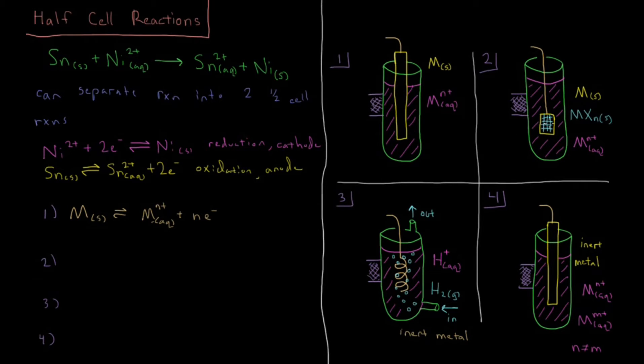A second type of reaction that can occur is where you have a solid metal and it's wrapped in a foil with some type of salt of that metal as well, and then there are aqueous ions of that metal in solution.